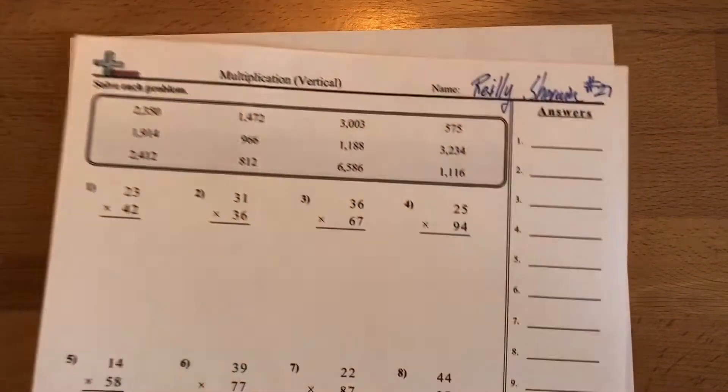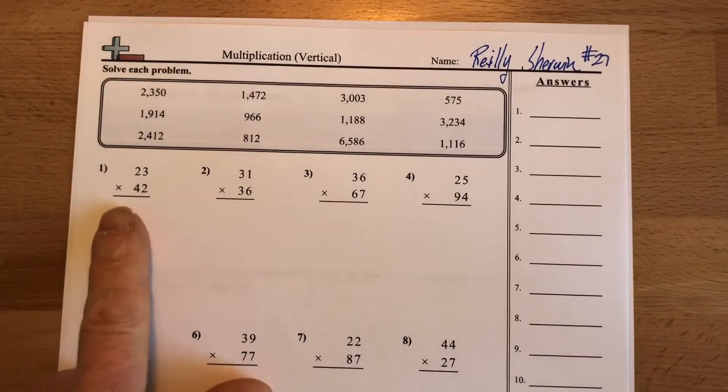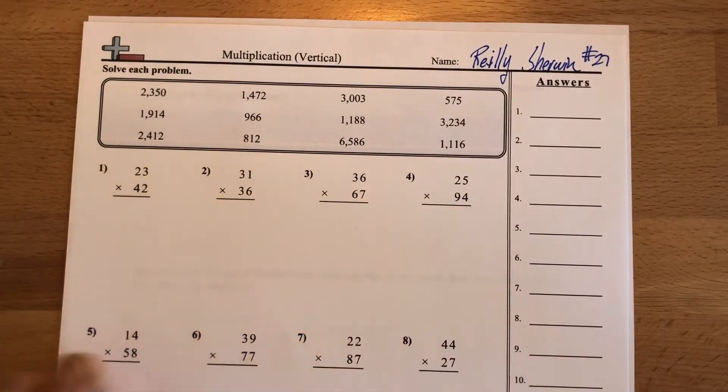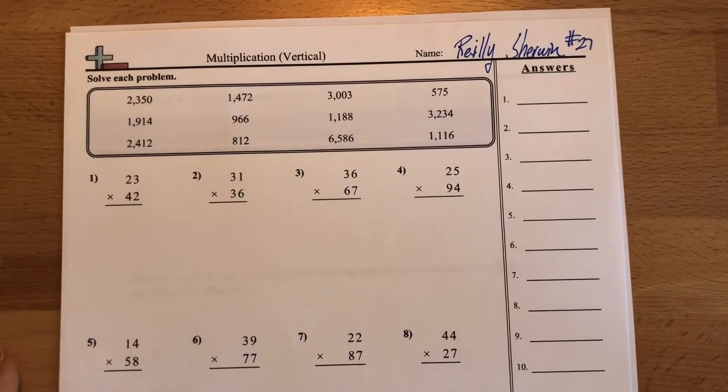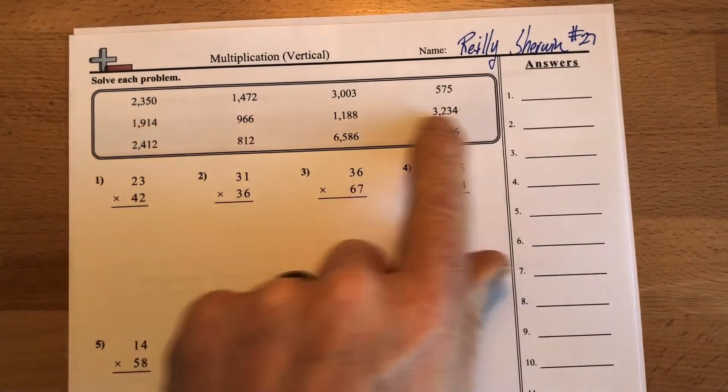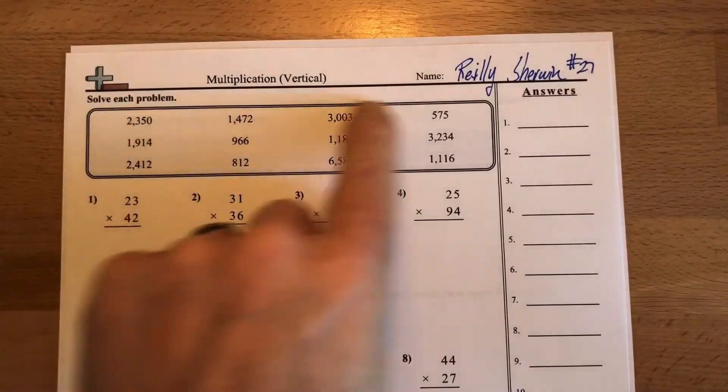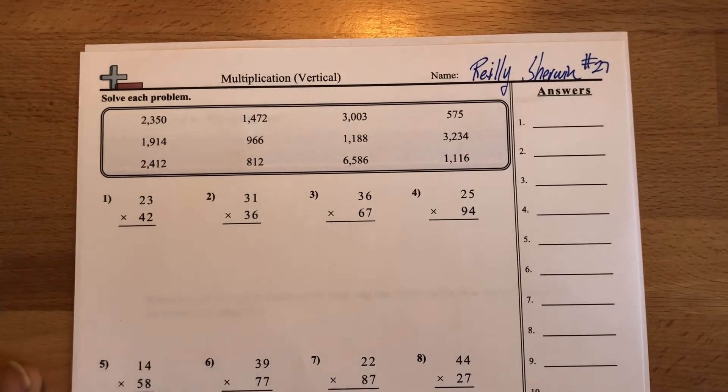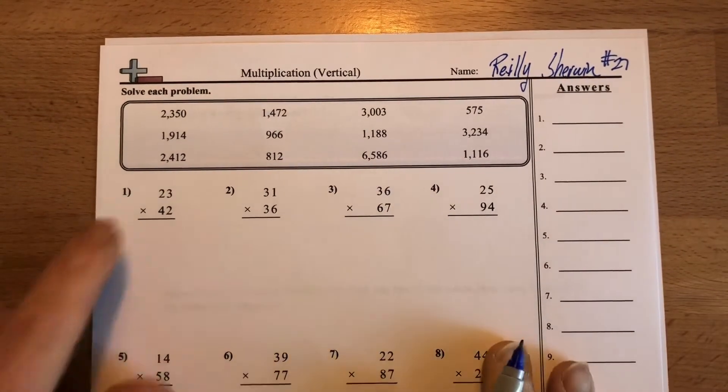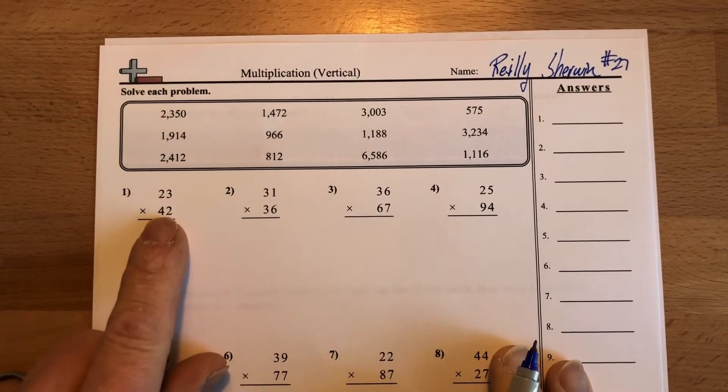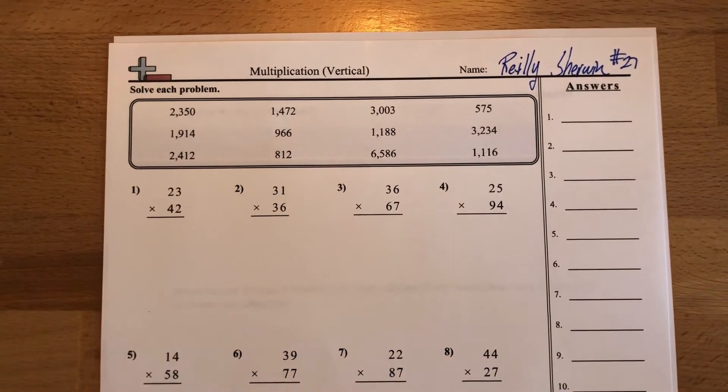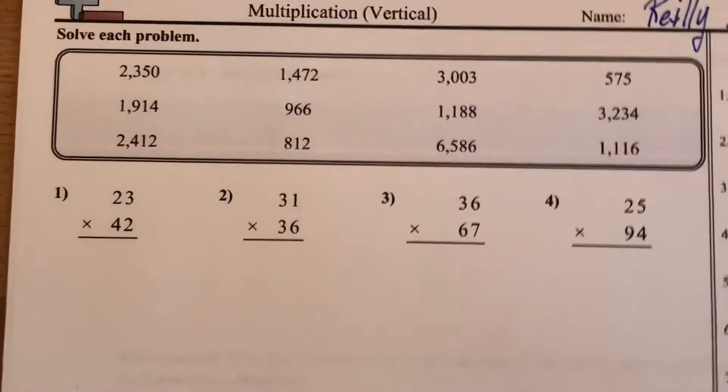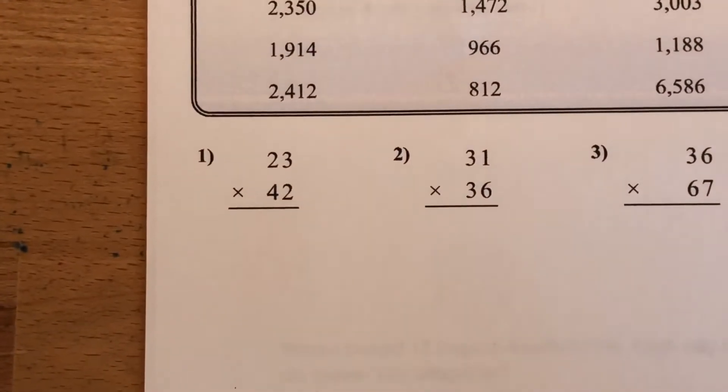So over here on our front sheet, you'll see that we have these multiplication problems, just like we did on our I can statement. And the answers are actually up here, so you can check your work to see if you're right. Let me show you what it looks like on the first one. First one here says 42 times 23. Remember, we start from the bottom up. I'm going to zoom in here so we can get a little closer.